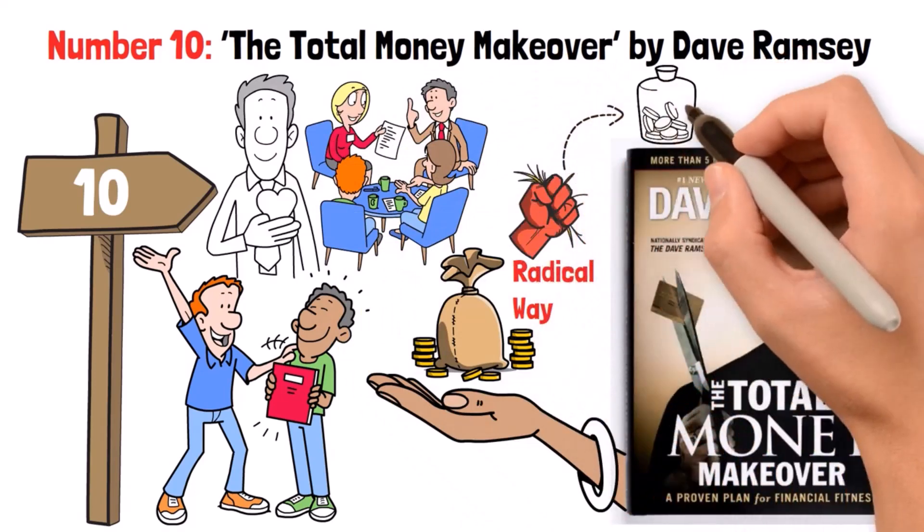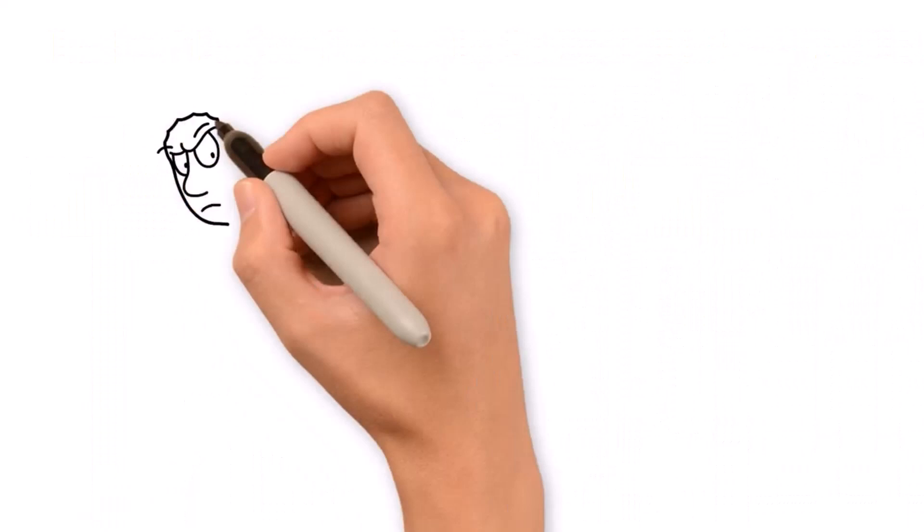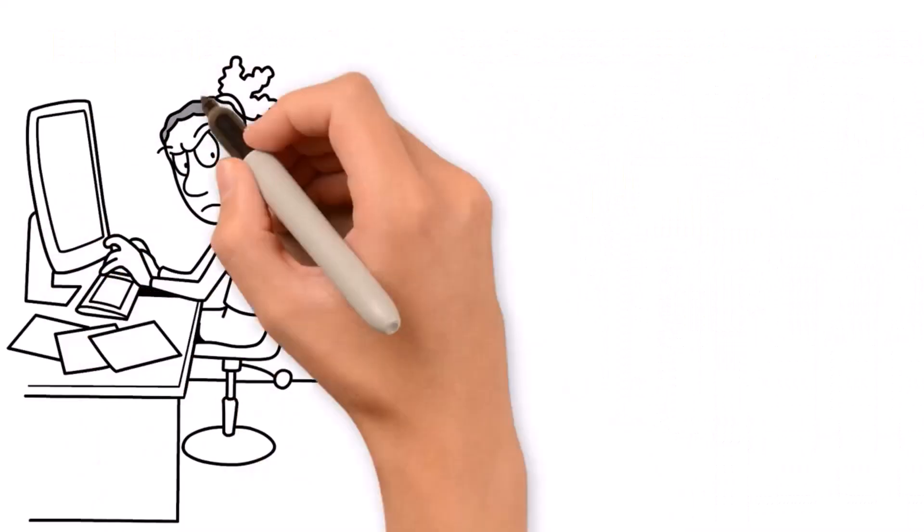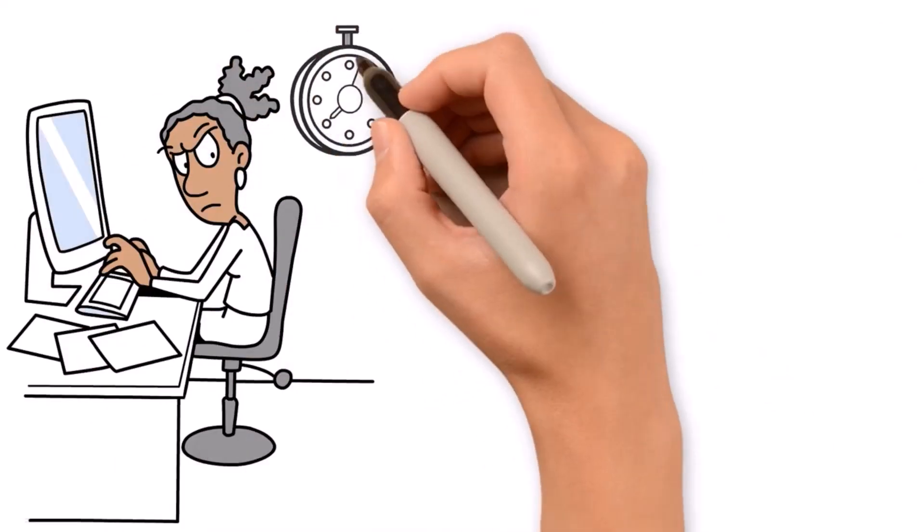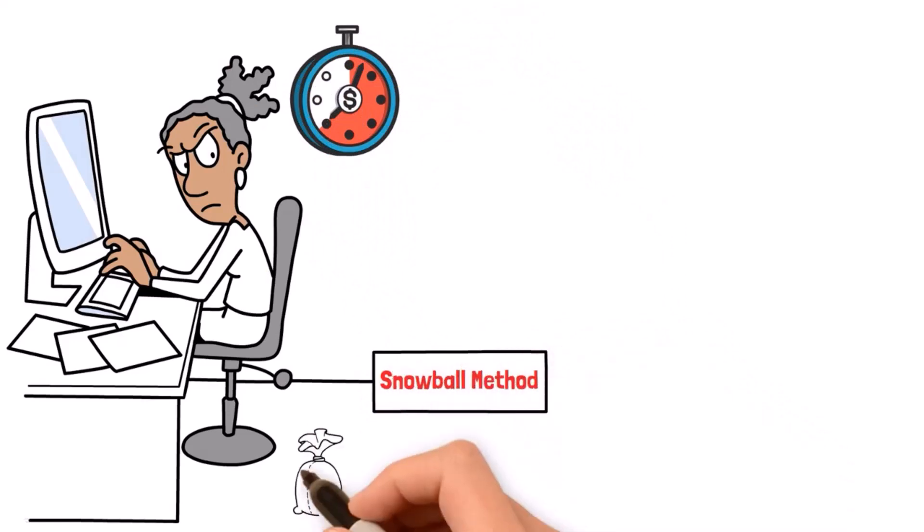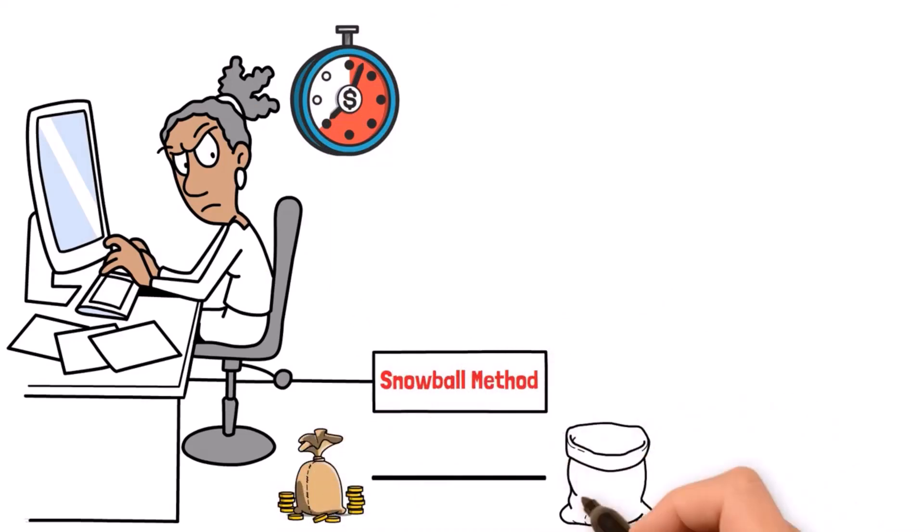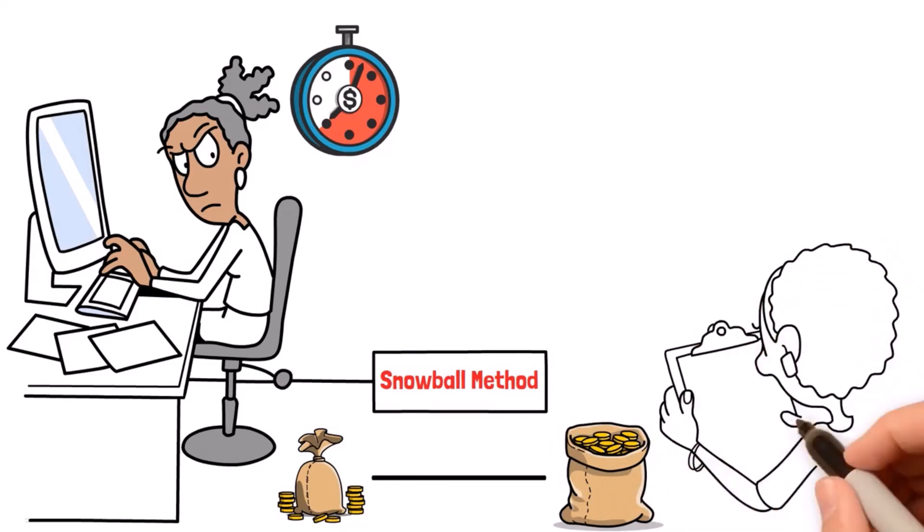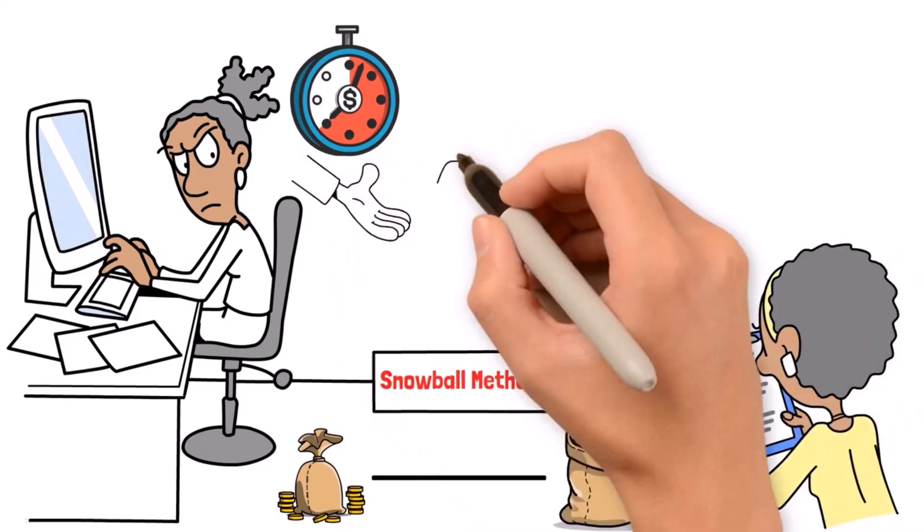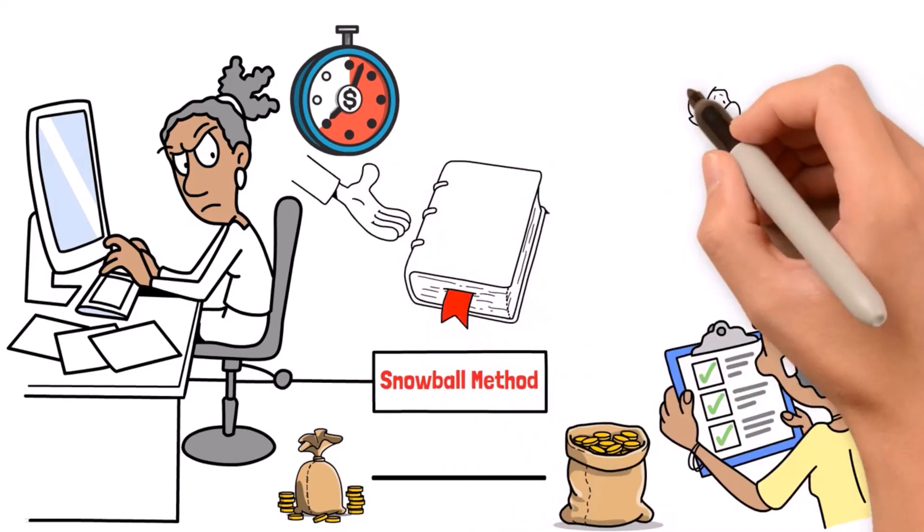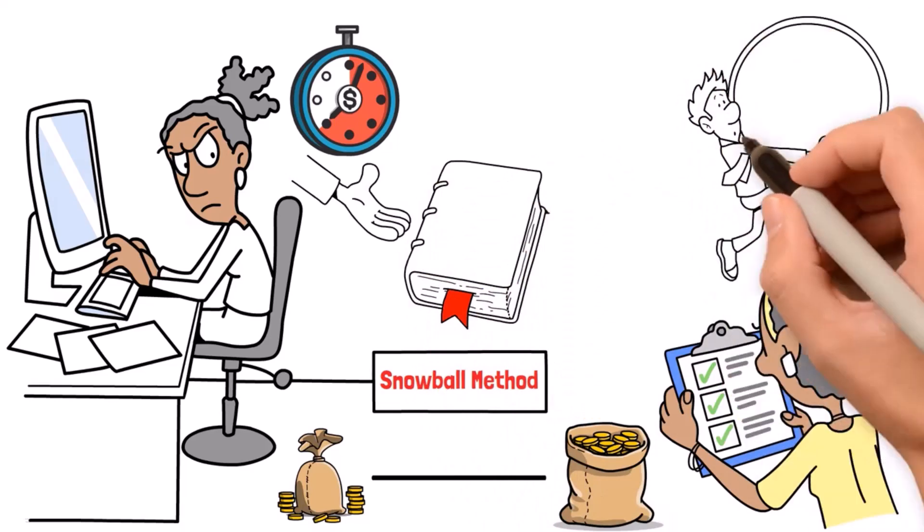The core of his method is getting aggressive about eliminating debt as fast as possible. He lays out his famous snowball method for paying off debt from smallest to largest to stay motivated as you knock them out one by one.